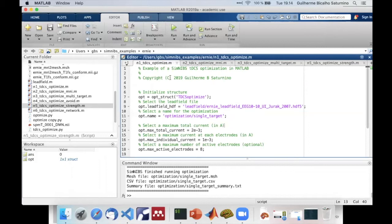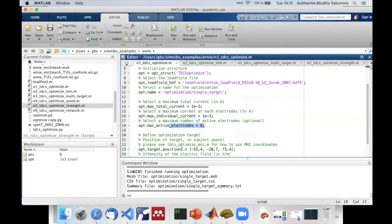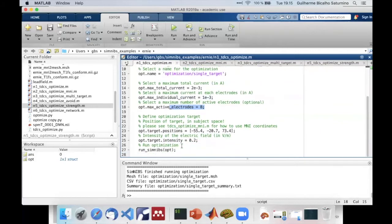SimNIBS offers an easy-to-use yet flexible interface to set up the optimizations. Here you can see I start by selecting a previously calculated lead field and a name for my optimization. I then go on to define the safety constraints: a maximum current I can inject in total, and the maximum current I can inject through each electrode, as well as a number of active electrodes, which correspond to the number of channels in my multi-channel TES system. Finally, I define my target position and the intensity of the electric field at the target.